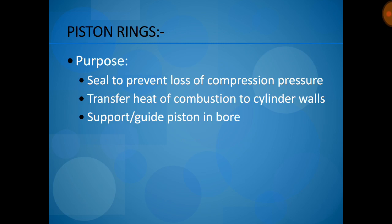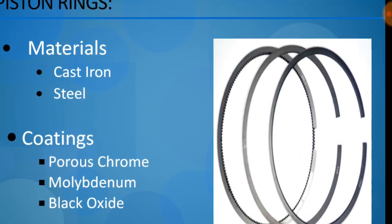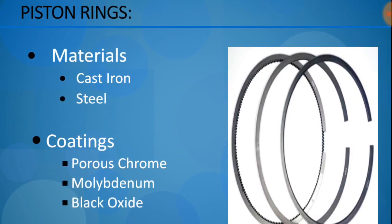The piston ring is used to seal the loss of compression pressure, transfer the heat of combustion to the cylinder walls, and support the piston in the bore. There are three types of rings: top ring, middle ring, and bottom ring, each with different functions.